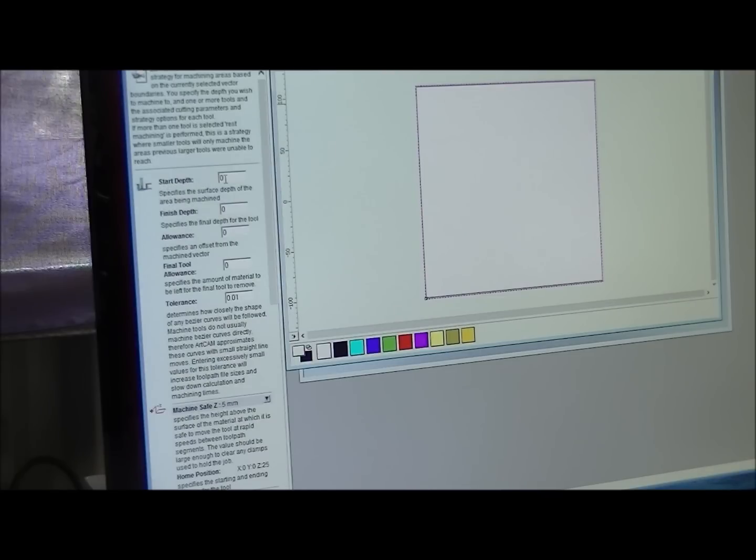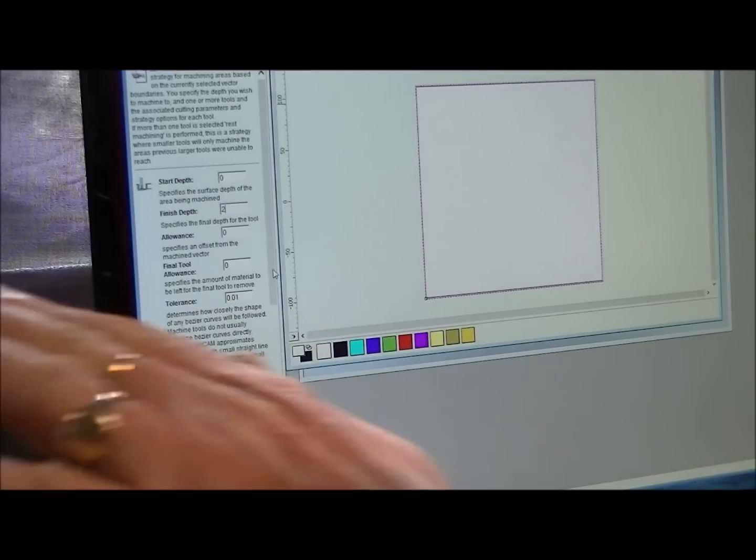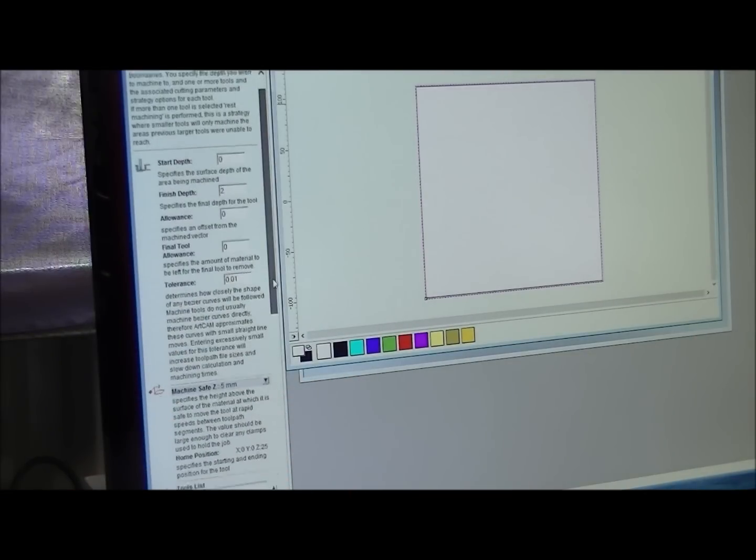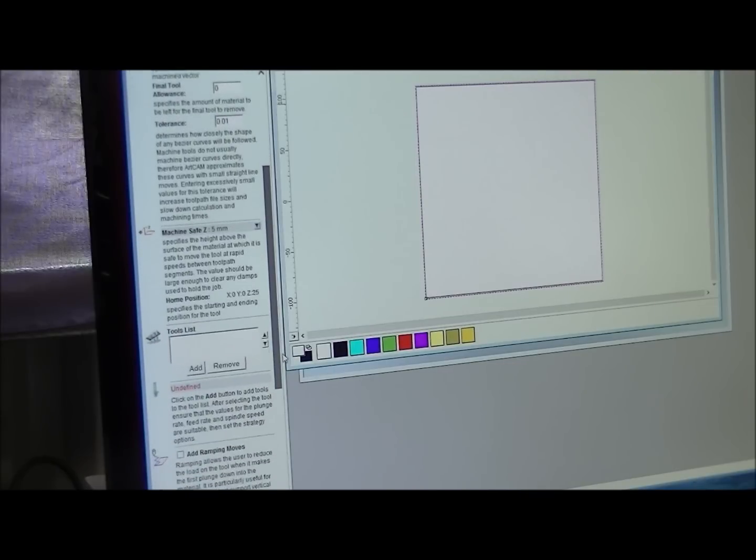Start depth. It's going to be zero, which is going to be the top of the material. Finish depth. I'm just going to go down two millimeters. If I require more, I can run the full program again, and I probably will. Allowance. Don't need to fill that out. This is just a straight area clearance. Just making something level. Tolerance doesn't matter.